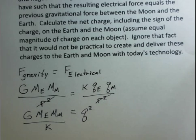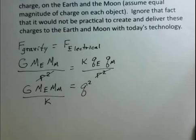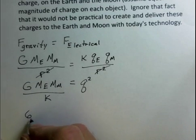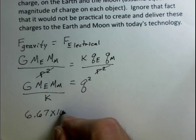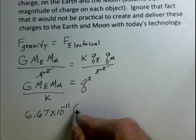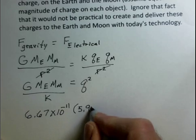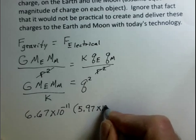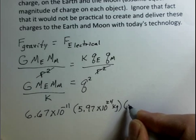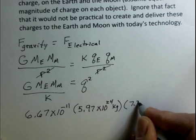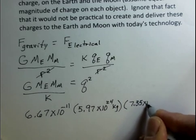So it's time to look up those values. Our universal constant of gravitation in standard metric units, 6.67 times 10 to the minus 11. The mass of the Earth, I looked up, 5.97 times 10 to the 24th kilograms. The mass of the Moon, 7.35 times 10 to the 22nd, about 81 times smaller than the mass of the Earth.